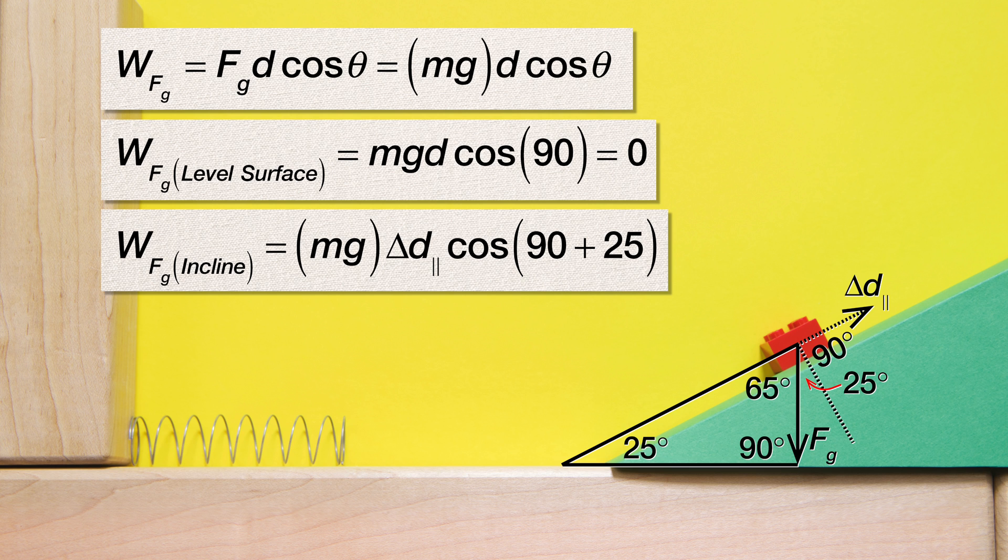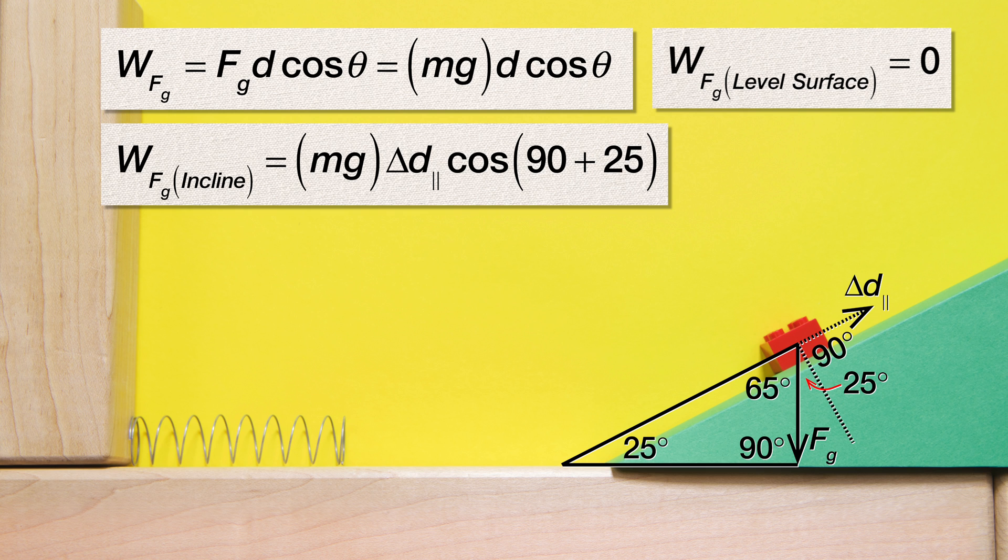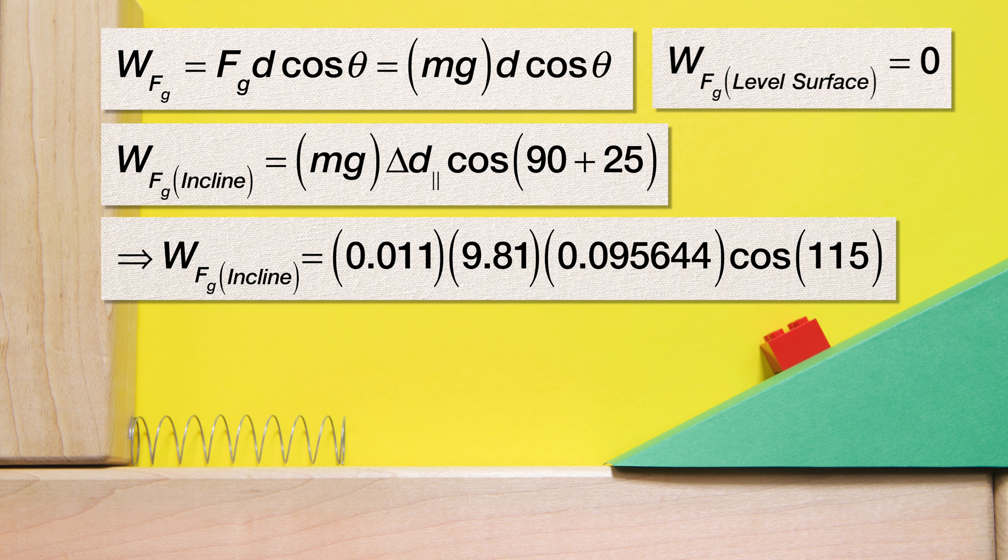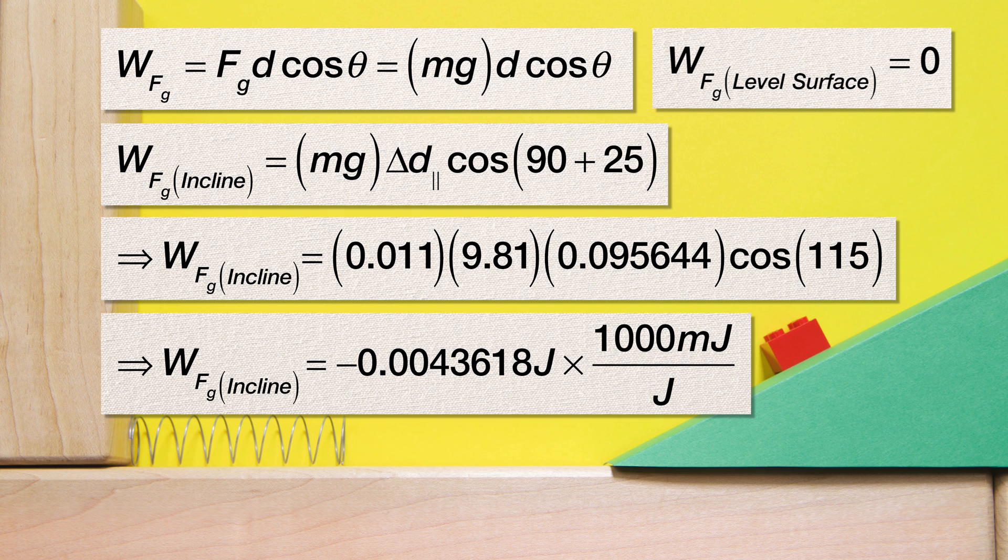Going back to the equation for work done by the force of gravity on the incline, all we need to do is substitute in the values, all of which with the exception of the angle, we know from the previous video. 0.011 times 9.81 times 0.095644 times cosine of 115 degrees, which works out to be negative 0.0043618 joules, which we can convert to millijoules by multiplying by 1000 millijoules over 1 joule to get, with two significant digits, negative 4.4 millijoules.